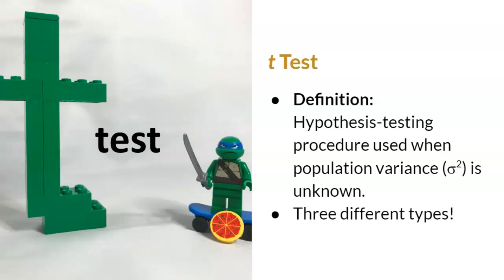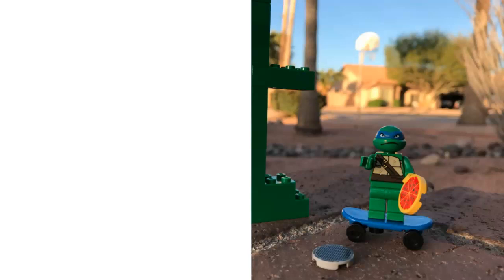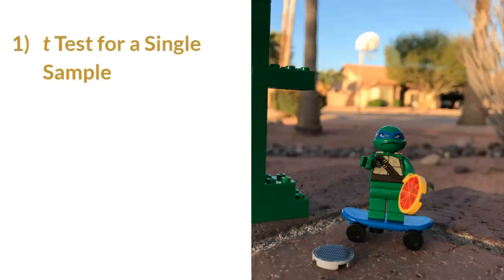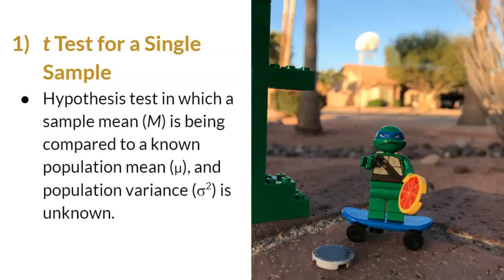There will be three different types of t-tests that you will learn this semester. The first is called the t-test for a single sample. The 't' refers to not knowing population variance, 'test' refers to a hypothesis test, and the test will compare a single sample to a population. This test is also referred to as a one-sample t-test — in other words, we have one sample that we're comparing to a population. With that brief introduction to t-tests, let's get started.